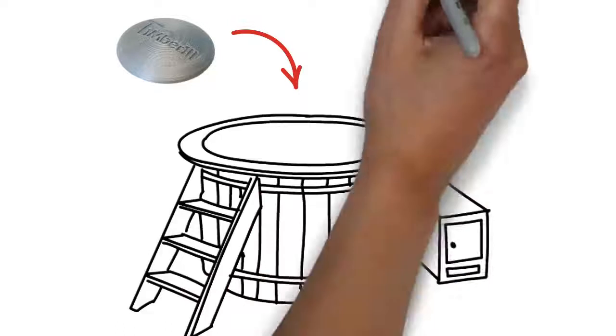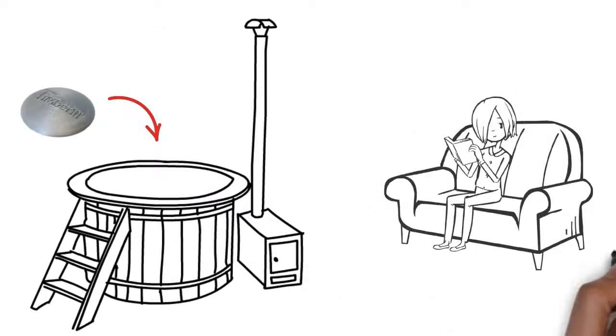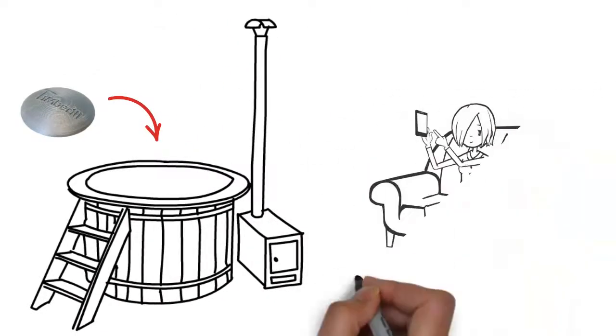Just plop the thermometer into the hot tub, turn on the Bluetooth connection on your phone, set the desired temperature, and the app will notify you.